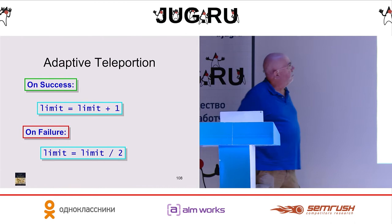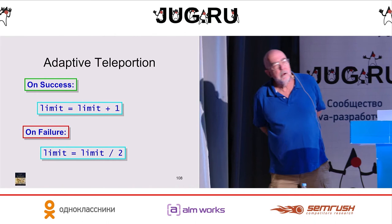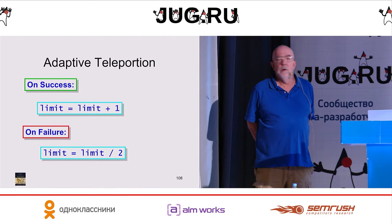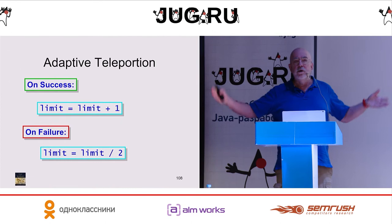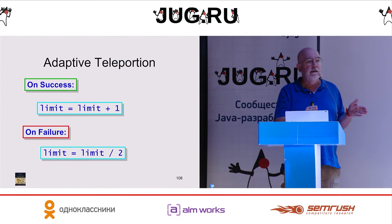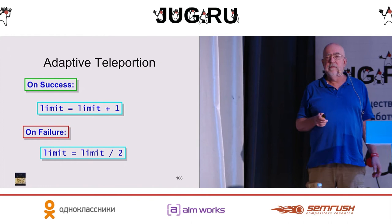A natural approach is to choose your size adaptively. We borrowed an idea from network protocols: if a transaction commits, we cautiously make the limit a little bigger. If the transaction aborts, we say we got too greedy, and we cut the transaction size in half because there may be a lot of contention going on. So we grow slowly and shrink aggressively.